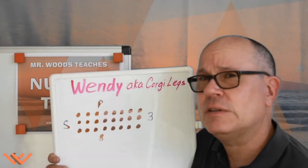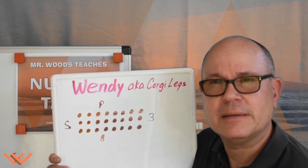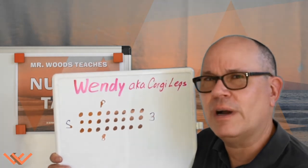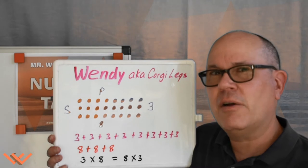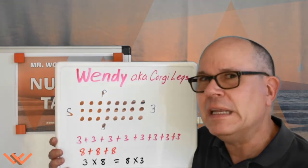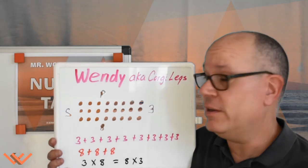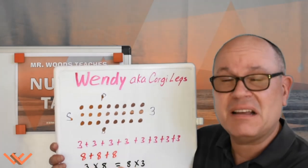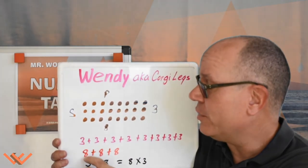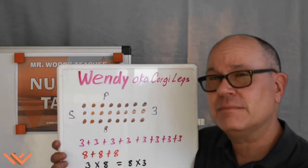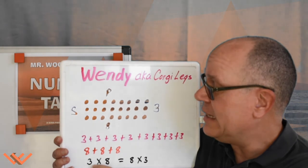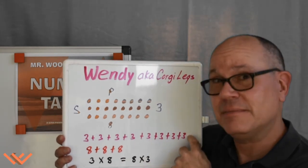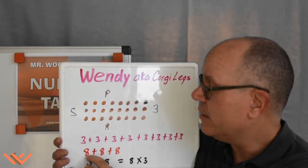You ever heard of a matrix or an array? How do you solve this? There's so many different ways. Let's take a look at a couple of them. How do you think Corgi Legs — I mean Wendy — solved this problem? Well, there's different ways she could have done it. She could have added three eight times, so three plus three plus three. That takes a while. It's a little bit shorter: eight plus eight plus eight, but still. Then we have three times eight — that's the same as saying three times eight, or eight times three, there's eight three times.